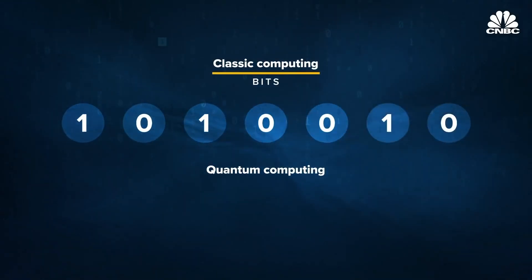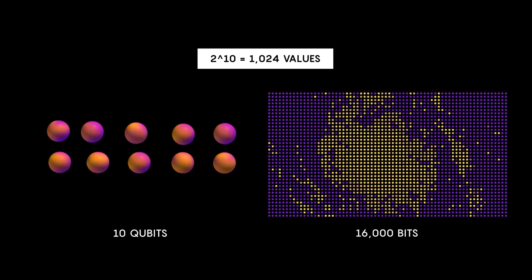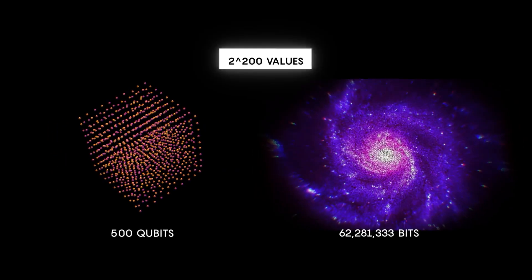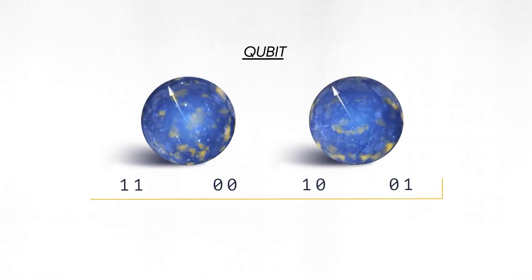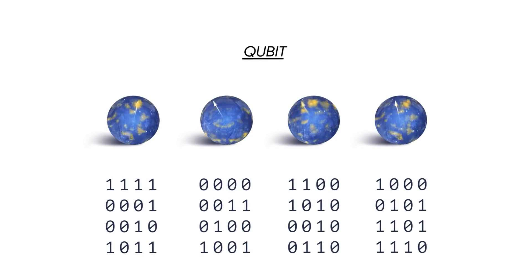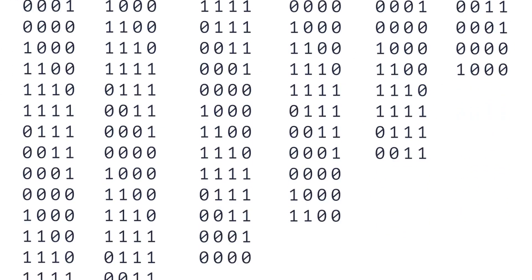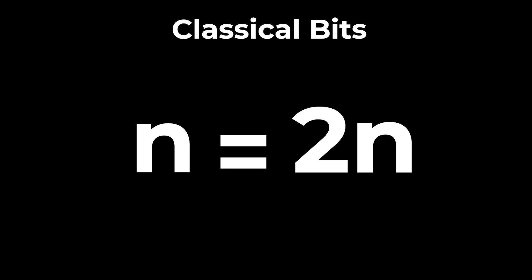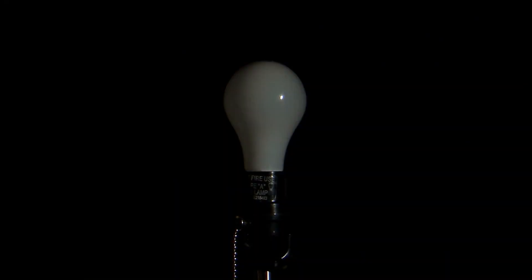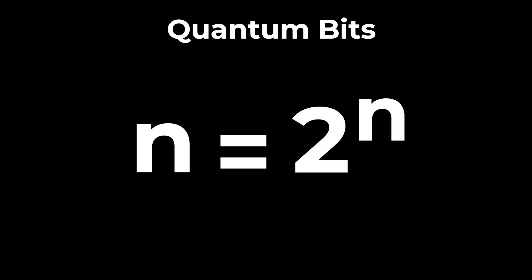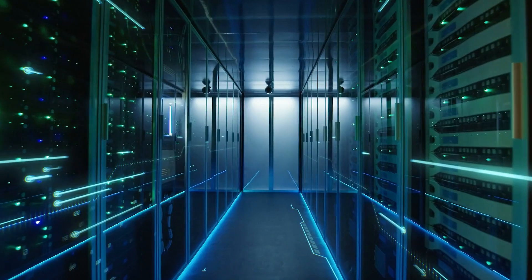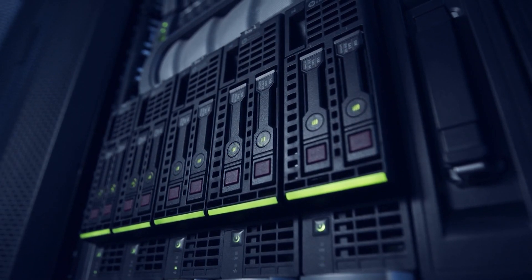Classical computers scale linearly with respect to the number of bits the system contains. But for a quantum computer, their computing power scales exponentially with respect to the number of quantum bits, or qubits, that are added. This is due to the amount of information that can be stored in a given number of qubits being larger than what can be stored in the same number of classical bits. N classical bits are able to store 2N pieces of information — they can either be on or off, encoding two states. Whereas N qubits are able to store 2^N pieces of information, since each qubit can be on, off, or anywhere in between. That exponential scaling gives quantum computers the potential to solve highly computationally intensive and previously unsolvable problems.